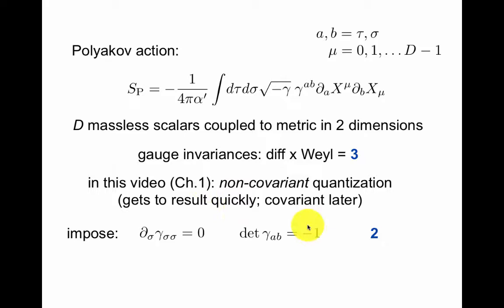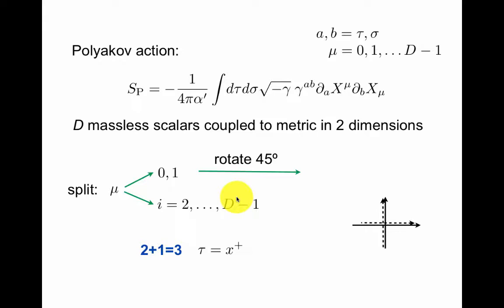To get there we'll impose some conditions. We need to fix these three invariances. We'll impose one condition on the σσ component of the metric and one on its determinant. We get one left. We split up the μ index into 0 and 1 and the rest. Take the 0 and 1 and we rotate 45 degrees. This looks like a light cone because this is time and this is space. So this is a light cone, x^+ and x^-.